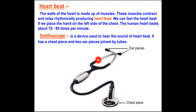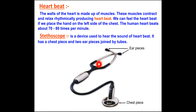Now let's look at the stethoscope. In this picture you can see the stethoscope — this part is the earpiece which we put in the ear, and the downside part is called the chest piece. This device is used to hear the sound of the heartbeat. Doctors use the stethoscope to listen to the heartbeat; it has a chest piece and earpiece joined by tubes.